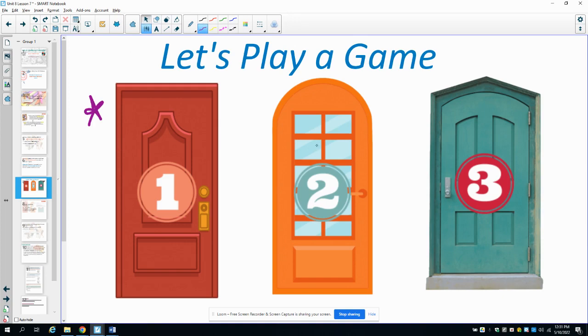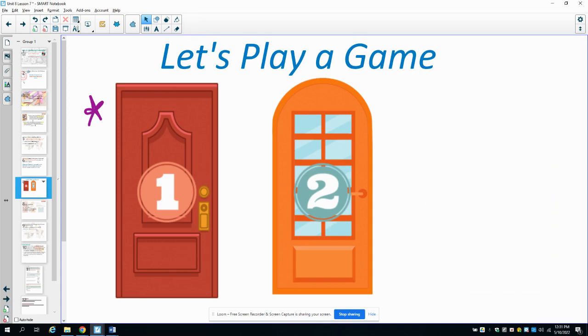Now the host, knowing where the prize is, reveals behind one of the two non-selected doors where there is not a prize. So the host in this case is going to say, all right, let me show you behind door number three, there was not a prize. So now we know the prize is for sure between either the door that the contestant selected or the other door. So then the host is going to allow the contestant to switch doors if they would like.